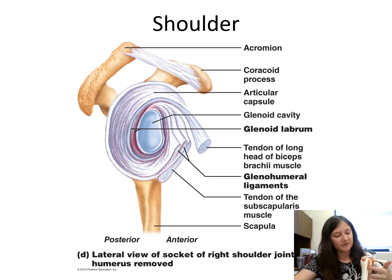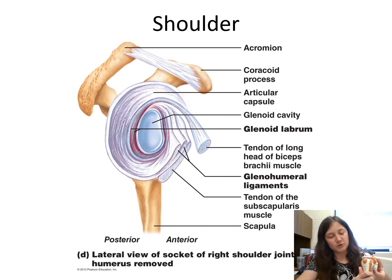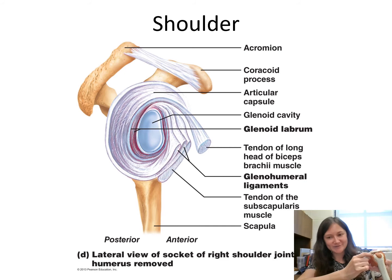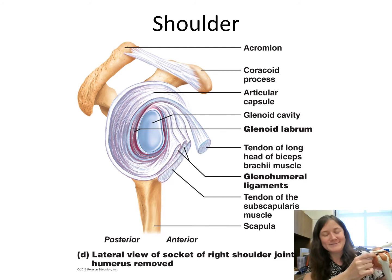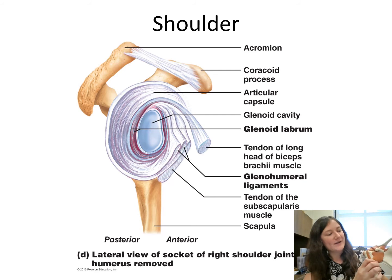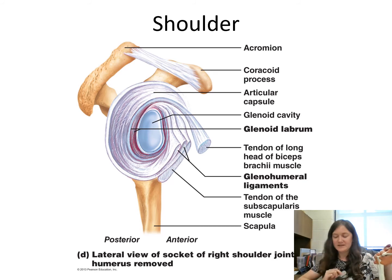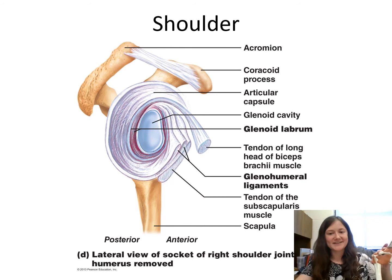The glenoid labrum is not really easy to show, but basically if you were to remove the humerus you'd be able to see this connective tissue structure. The model just fell off of the base — apologies for that. Your sympathetic nervous system probably just kicked in with the fight or flight response with that loud noise. We have the glenoid labrum here, and we also have the coracohumeral ligament.